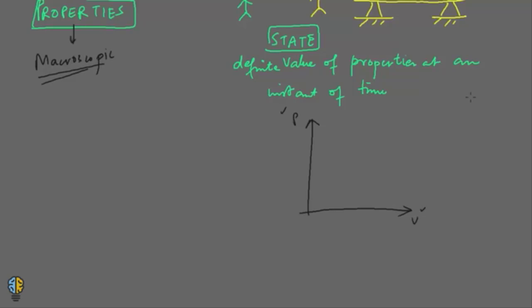Let's say that your system has a state at this point. At this state, the value of property P is P1 — let us define this state as 1 — and the value of property V is V1. So at condition 1, property P has a value P1 and property V has a value V1, which means P1 and V1, or condition 1, becomes the state of the system. At point 1, you have definite values of properties P and V.